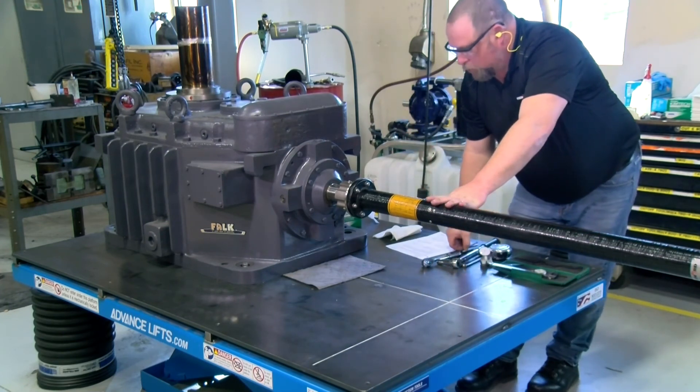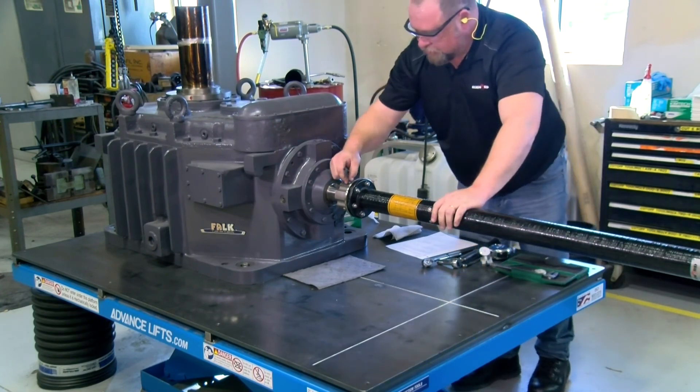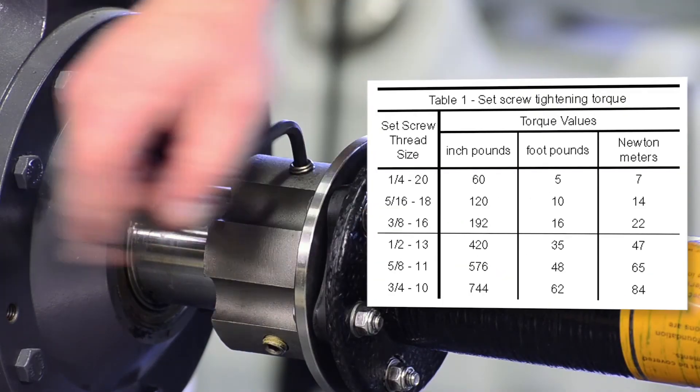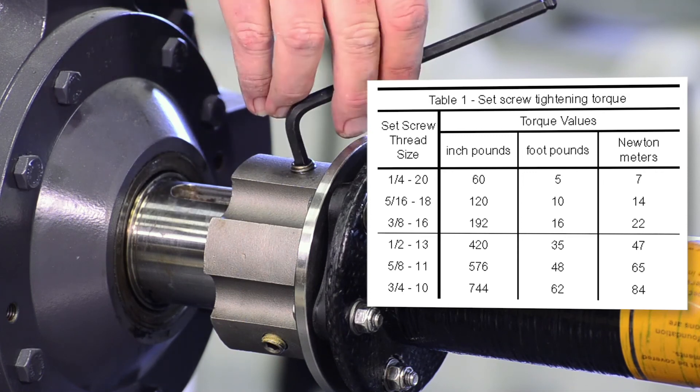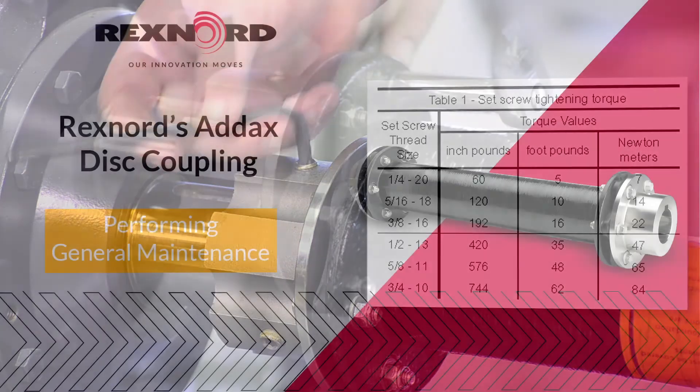Once alignment is finalized and confirmed to be within limits, ensure that the set screws on both hubs have been properly tightened to their specified torque values.